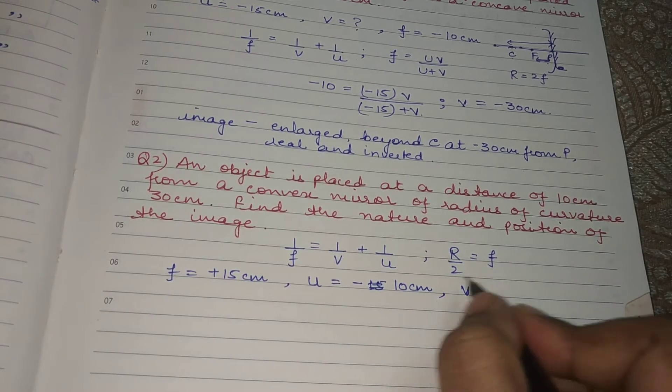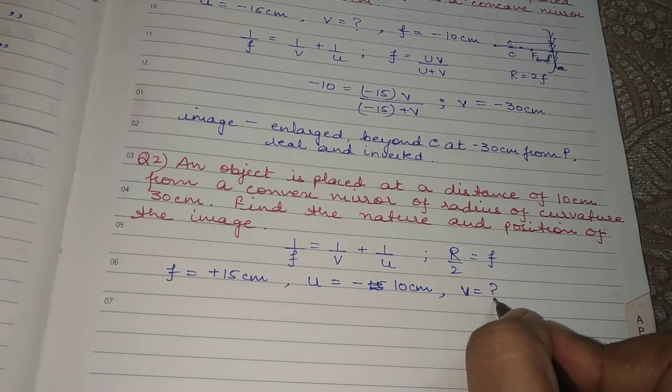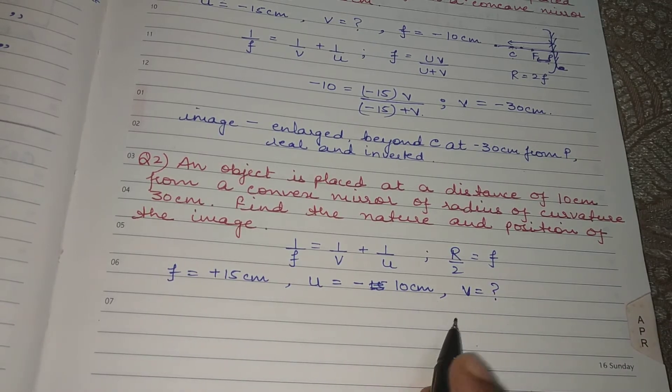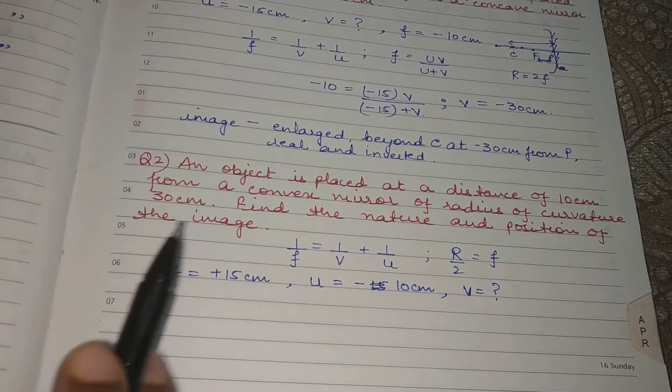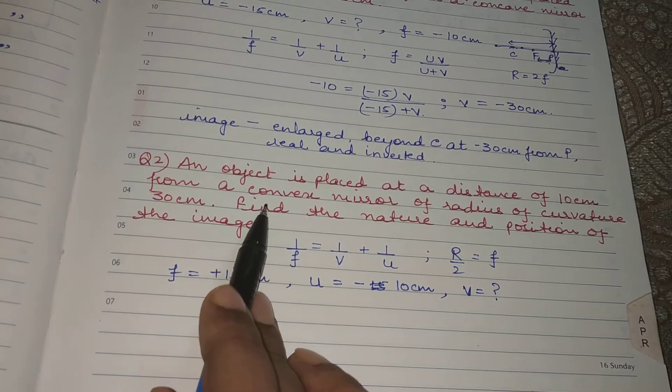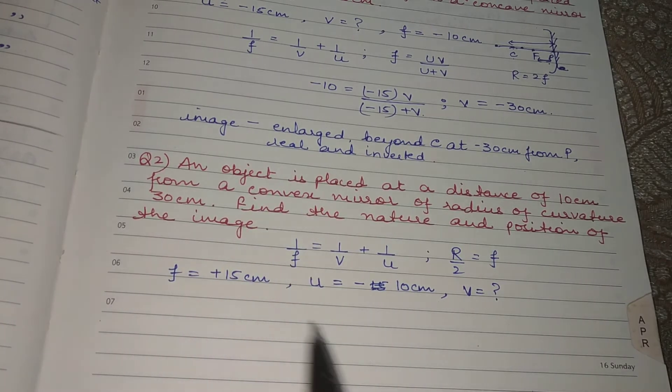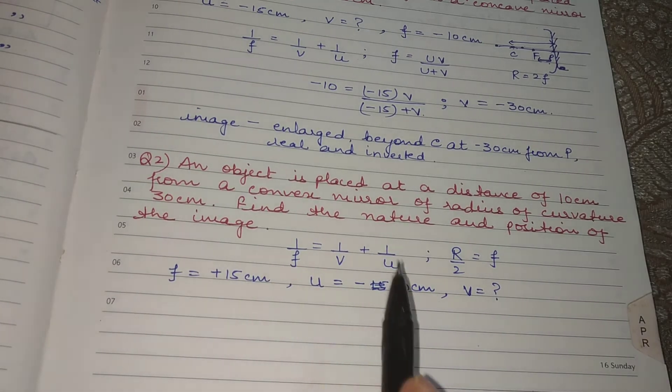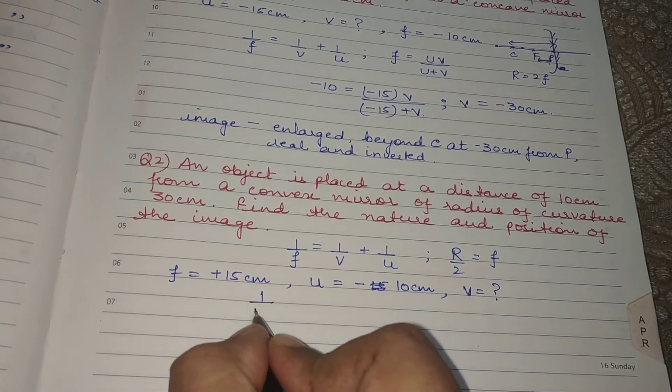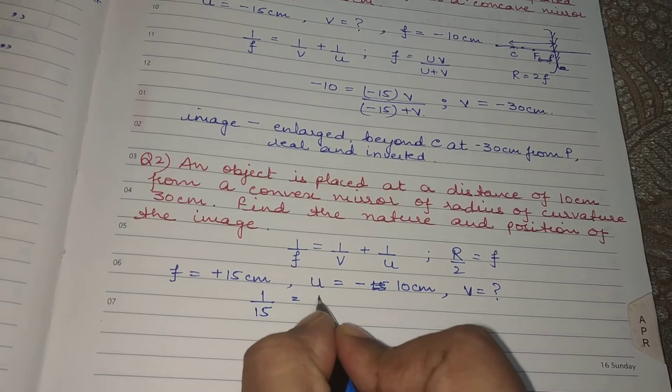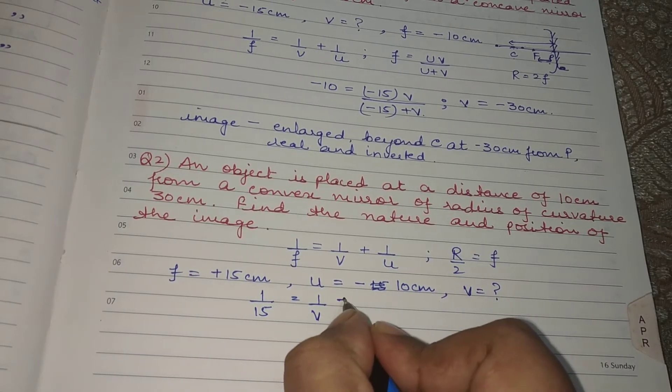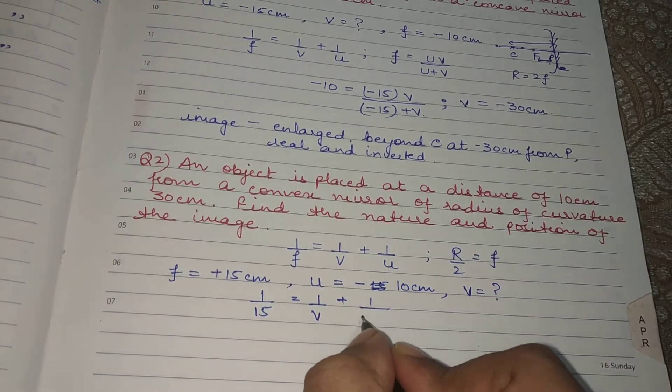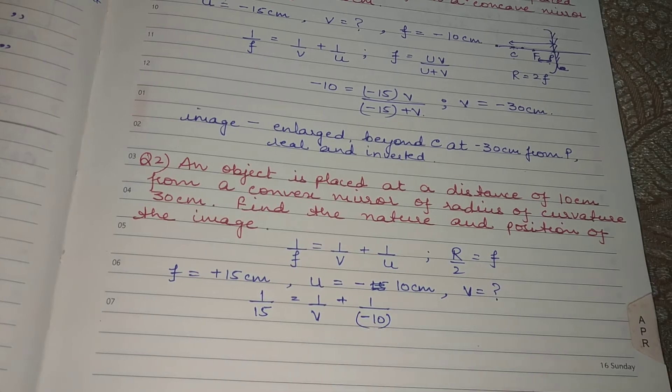What is the symbol for image distance? It is v. So it is the same question as earlier, but the difference is that we have here convex mirror. So on putting the values in the equation we have 1 upon 15 equals to 1 upon v plus 1 upon minus 10.